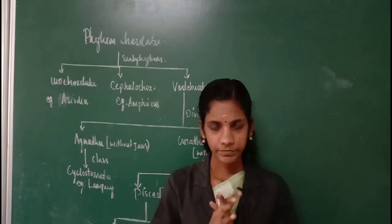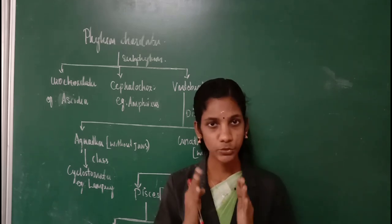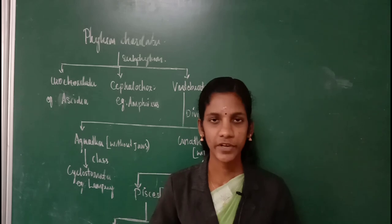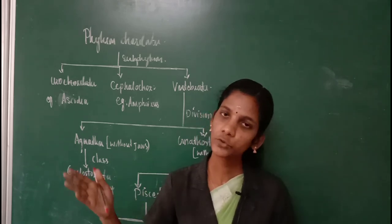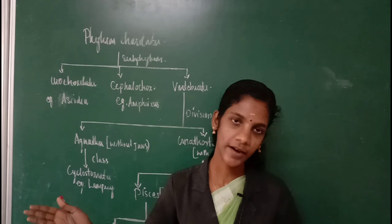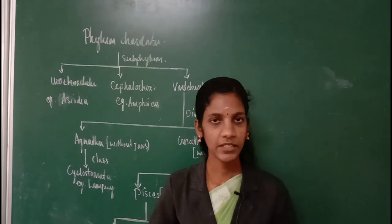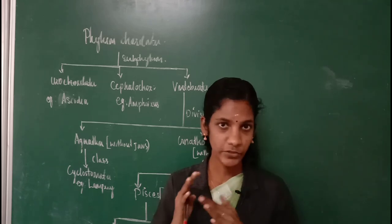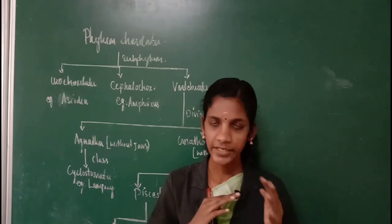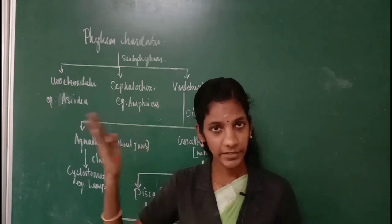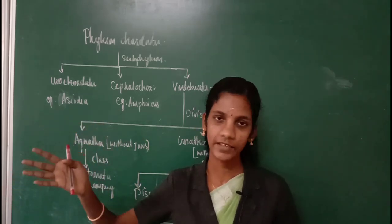Fish will always have a 2-chambered heart, but in the case of Tetrapoda, they may have a 3 or 4-chambered heart. Fishes will not have any internal ear, while in the case of Tetrapoda, they may have a distinct internal ear.